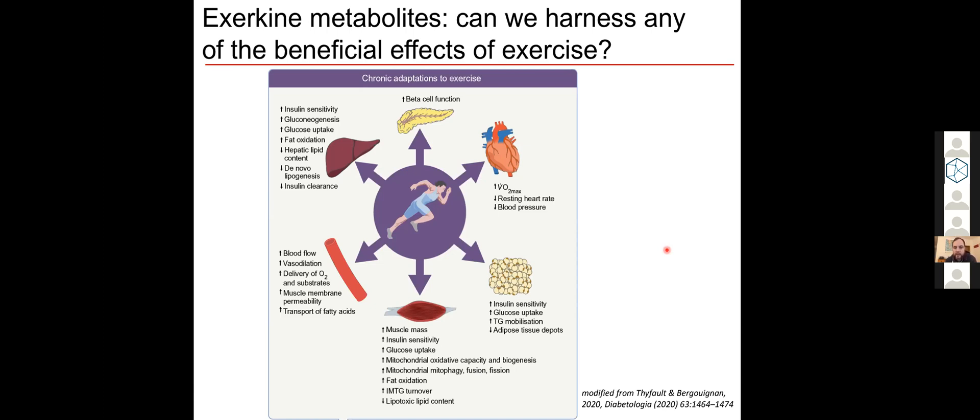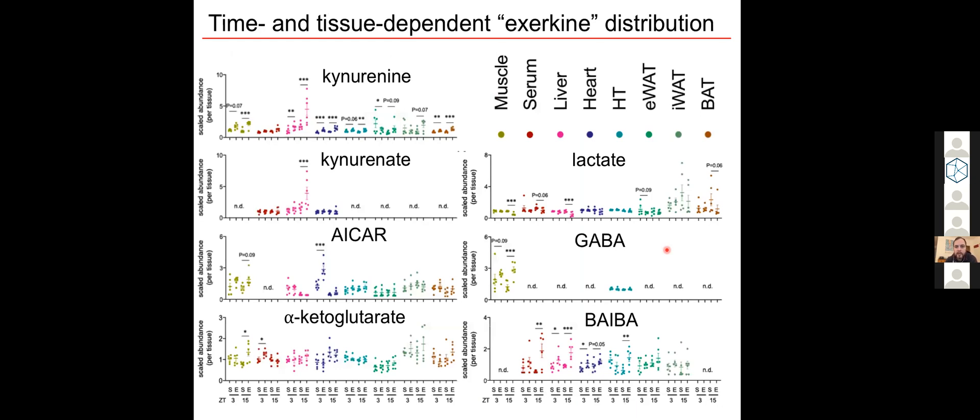But many of these exerkines were identified by artificial in vitro screens or by sampling blood, so their actual tissue origin and their destinations are mostly unknown. But we can now use our data to provide some important physiological context about their time and tissue dependent production.